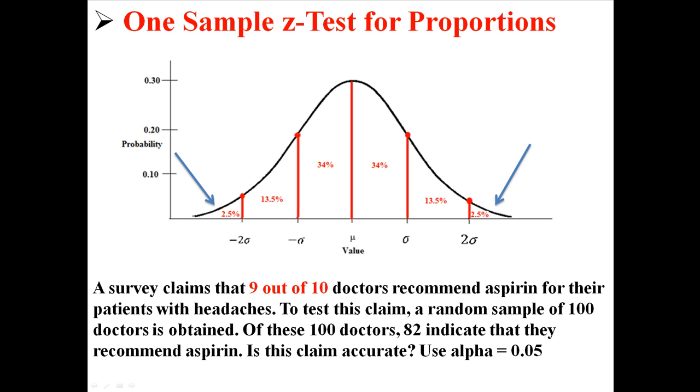Now see that we are dealing with 9 out of 10 doctors. That's how we know that this isn't a regular z-test. It's actually going to be a proportion, because 9 out of 10 is a fraction, it's a proportion. So we're going to use a different z-equation to calculate the z-value. It's going to be almost exactly the same, with just a slight difference.